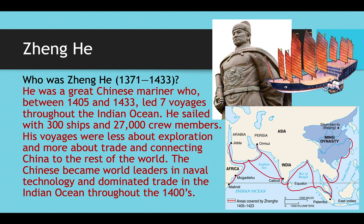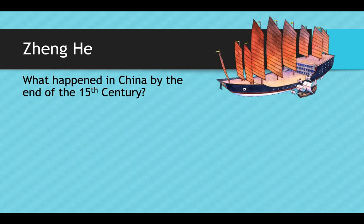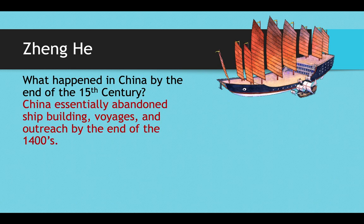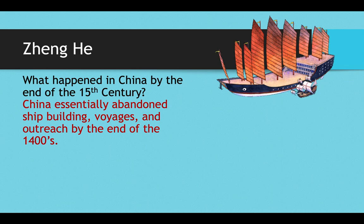A big question is: if this is the 1400s and Christopher Columbus discovered America in 1492, why didn't the Chinese discover America first? They had massive ships, far better naval technology, and were just an ocean away — the Pacific Ocean — just like the Europeans were the Atlantic Ocean away from the New World. The answer has to do with something that happened in China by the end of the 1400s. China essentially abandoned shipbuilding, voyages, and all outreach, because a new emperor who took power after his father died in the Ming dynasty believed that China would lose its culture and strength if it continued to reach out to the rest of the world.